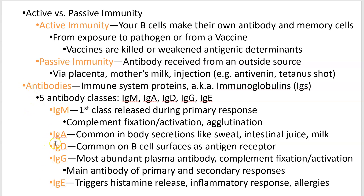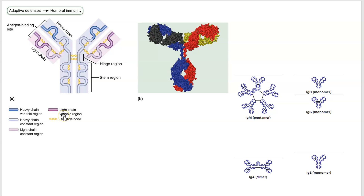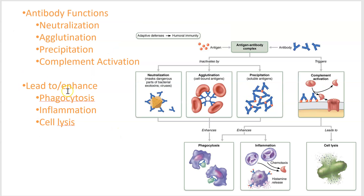There are five different classes of antibodies — learn those. Here's kind of what antibodies look like. You don't have to worry about the heavy chains, light chains, or how many amino acids they are. IgM is a pentamer — a five-sided star kind of thing. IgA is a dimer. All the rest are monomers. Here is what antibodies can do for you.